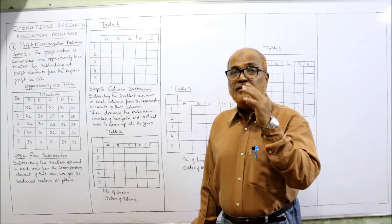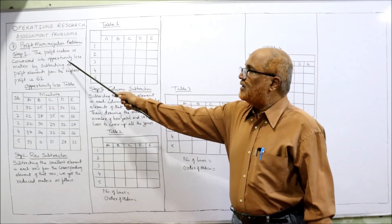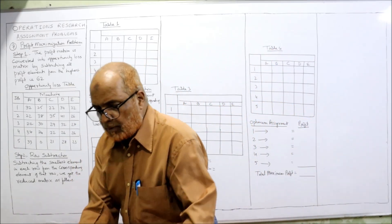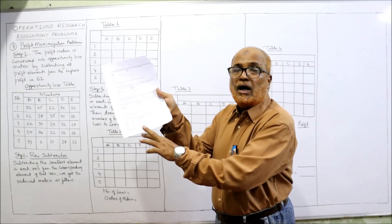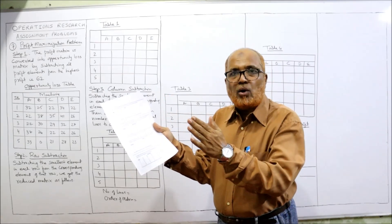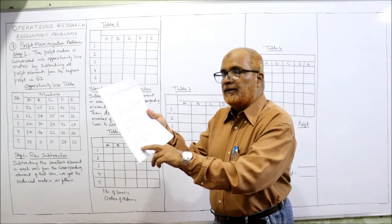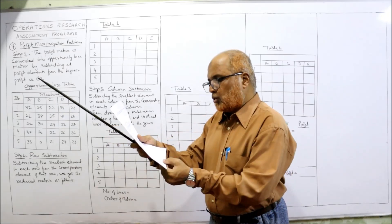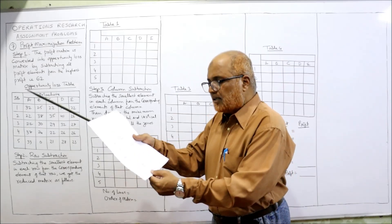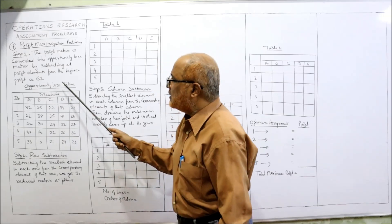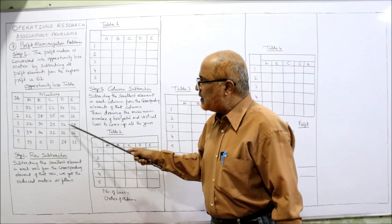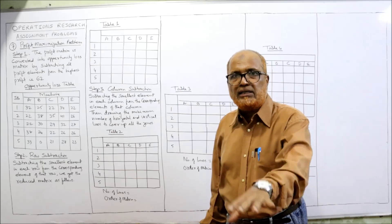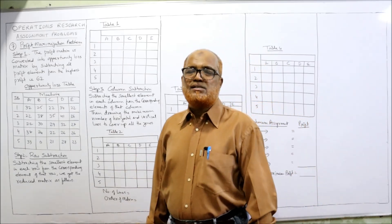To apply the Hungarian method for minimization, the first step is to convert the profit matrix into an opportunity loss matrix by subtracting all profit elements from the highest profit in the problem. The highest profit among all elements is 62. So we subtract all elements from 62: 62 minus 30 gives 32, 62 minus 37 gives 25, 62 minus 40 gives 22, and so on. From 62, subtract all given elements to get the opportunity loss matrix.